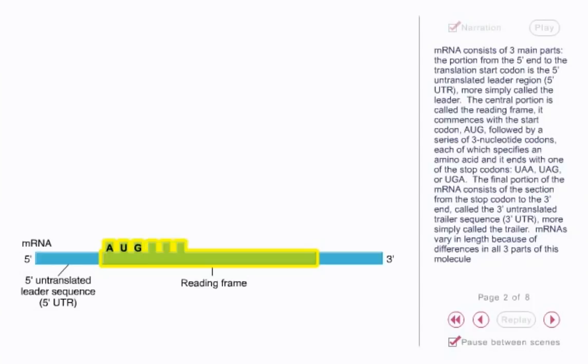followed by a series of three nucleotide codons, each of which specifies an amino acid, and it ends with one of the stop codons: UAA, UAG, or UGA.